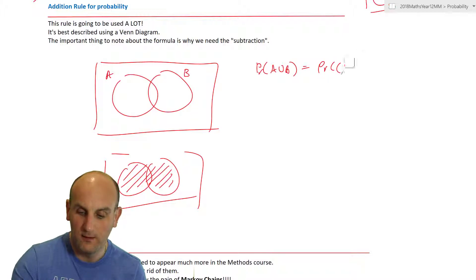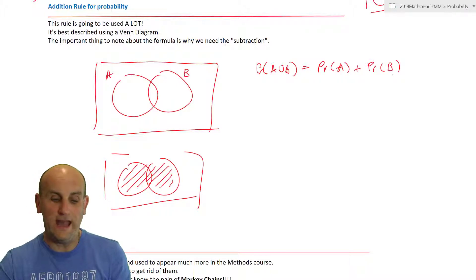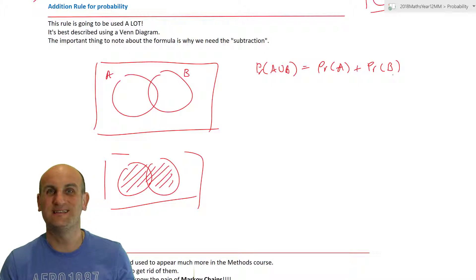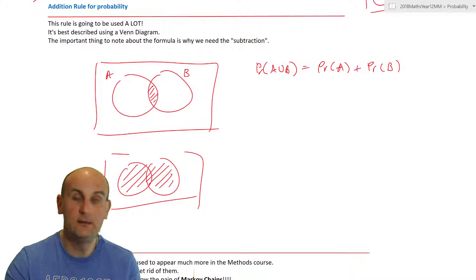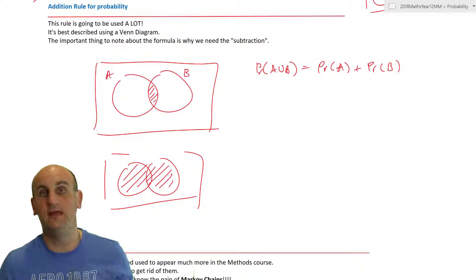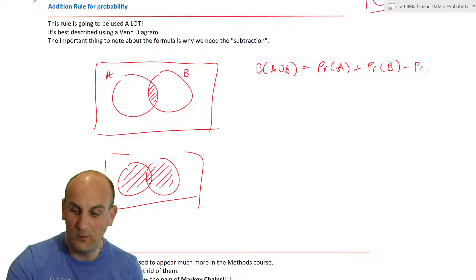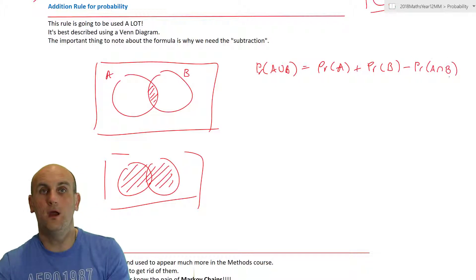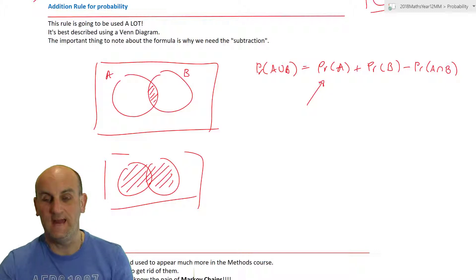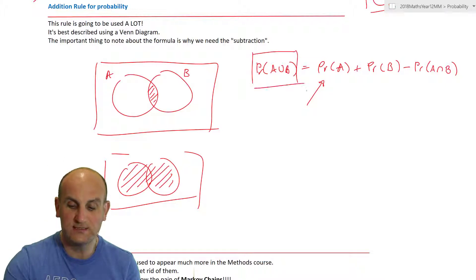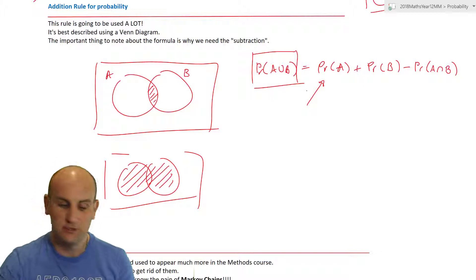There's a small problem: when I add P(A) and P(B) together I could end up with a number greater than 1. That's because we end up double-counting the middle overlapping bit. If an event happens in both A and B, we need to single-count it. The way we do that is subtract the intersection once: P(A ∪ B) = P(A) + P(B) − P(A ∩ B).